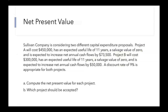Let's review Chapter 27. Our first question deals with net present value. Sullivan Company is considering two different capital expenditure proposals. Project A will have a cost of $450,000, an expected useful life of 11 years, a salvage value of zero, and is expected to increase net annual cash flows by $73,500. Project B will cost $300,000, has an expected useful life of 11 years, a salvage value of zero, and is expected to increase net annual cash flows by $50,000. A discount rate of 9% is appropriate for both projects. We need to compute the net present value for each and figure out which project should be accepted.